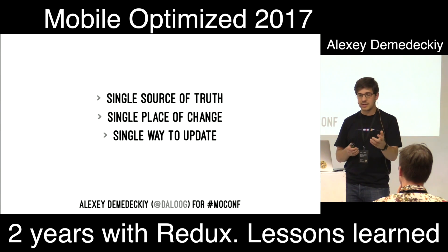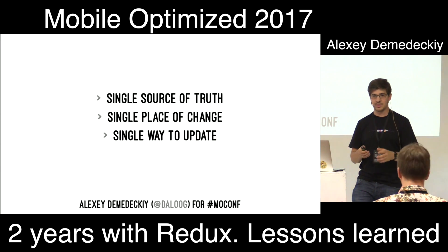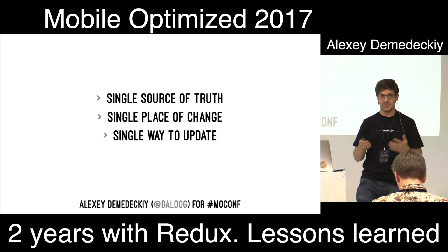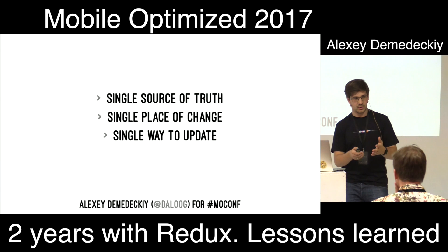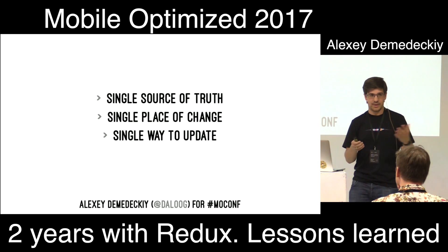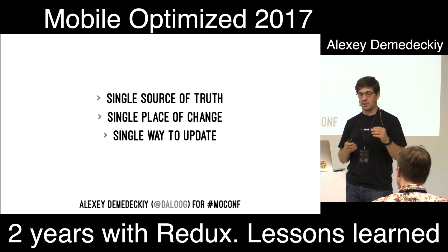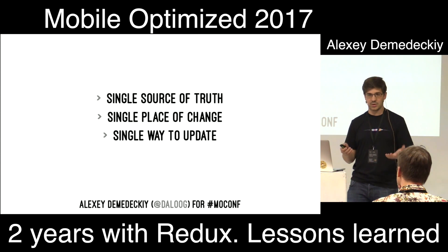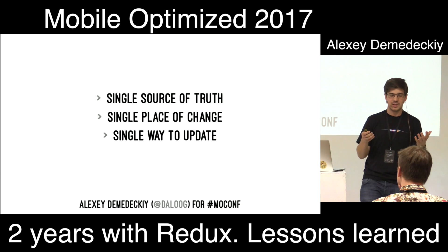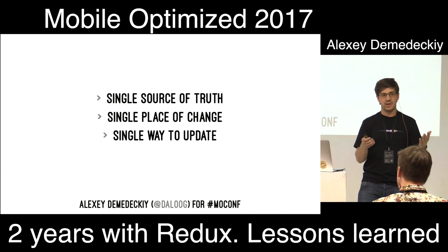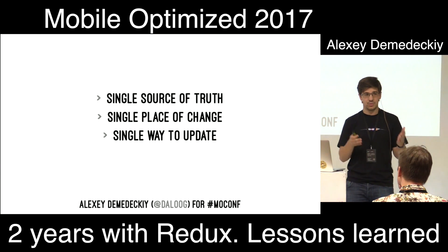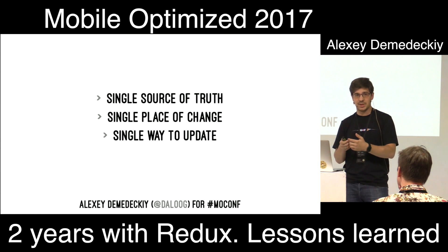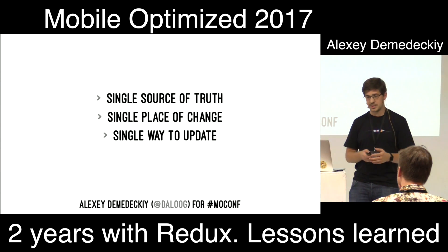You have a single place of change where all mutations are applied to the state. If it's a single place, you know where to look for your code. You can quickly find the reference code. You also have a single way to receive updates from the shared state. So the core of your application is basically three items: how to store the state, how to mutate the state, and how to transfer updates to all other participants.